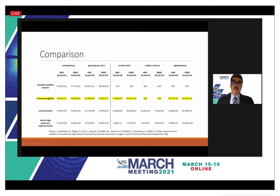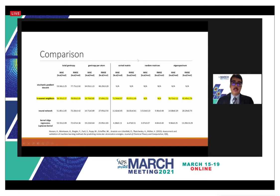Next is a comparison of results. On the left are our gentropy-based calculations; on the right are previous calculations using sorted matrices, several random matrices to represent one molecule, and the eigenspectrum representation. Going from total gentropy to gentropy per atom, we see a reduction in errors across methods. The better-performing ones are k-nearest neighbors, neural network, and kernel ridge regression.